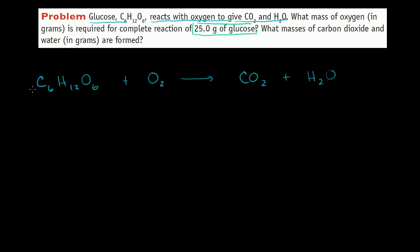On the left-hand side, you always want to do the most complicated molecules first and then the simplest molecules last, because those are the easiest ones to balance out. On the left-hand side I have six carbons — six carbons on the entire left-hand side. On the right-hand side I only have one carbon, so let me multiply the CO2 by six. Now I have six carbons on both sides of this equation.